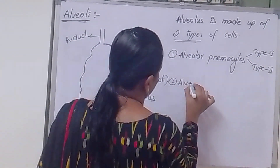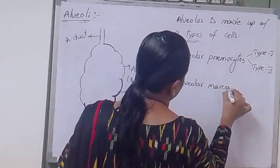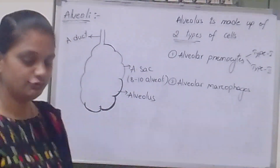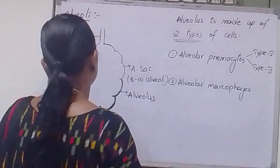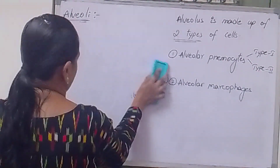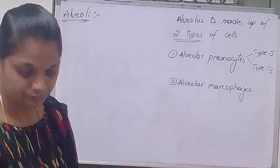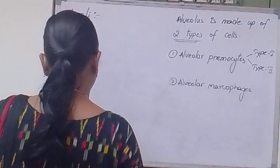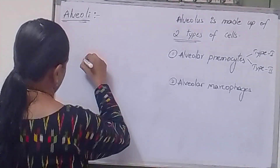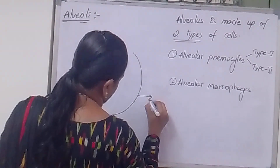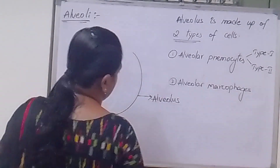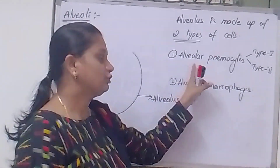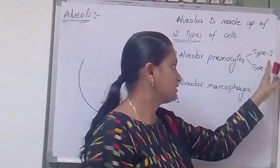The second type of cell is alveolar macrophages. So the wall of the alveolus is made up of two types of cells: alveolar pneumocytes and alveolar macrophages. Alveolar pneumocytes are of two types — Type 1 and Type 2.